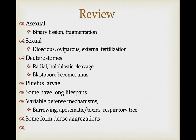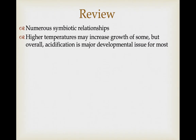They have a variety of larval forms, but know and be able to recognize the pluteus larval form. Because of their capabilities for asexual repair and reproduction, they have potentially long lifespans. Defense mechanisms include burrowing, slowly crawling away, ejection of arms, aposematic coloration associated with toxins, and adhesive tubules from the respiratory tree in sea cucumbers. Some form dense aggregations and show sociality. They have a number of symbiotic relationships to recognize. Higher temperatures can increase growth of problematic species like the crown-of-thorns sea star, and overall acidification is going to be a major developmental issue for most echinoderms.